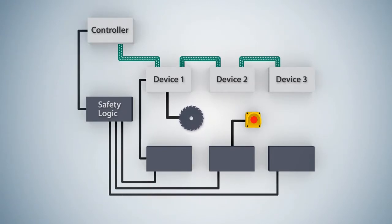This leads to high wiring costs. Actuation of the emergency stop sends an electrical pulse to the safety logic. The safety logic sends a signal via a safe input on the drive that the saw must be switched off. The saw comes to a stop.